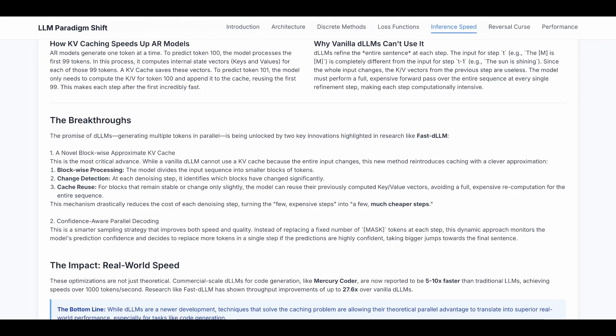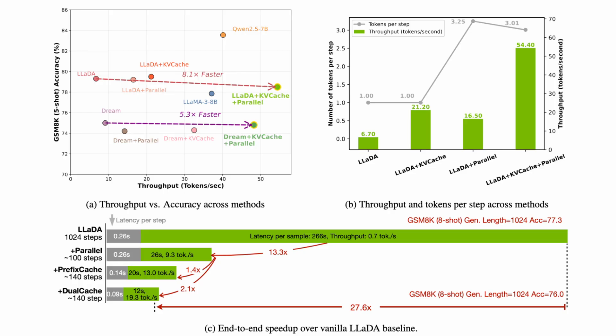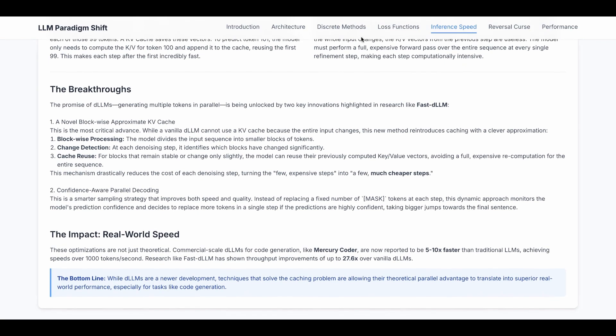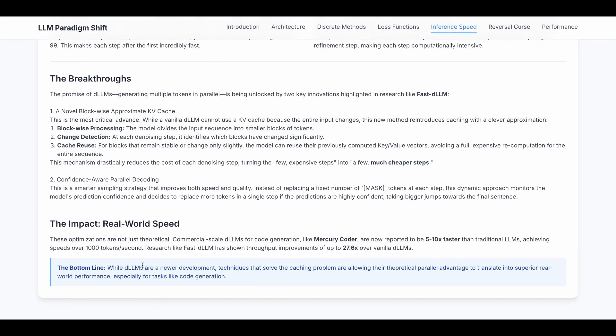With all those breakthroughs, diffusion-based LMs are actually faster than autoregressive right now. It's reported like for Mercury Coder, it's five to ten times faster than traditional LMs. And for Google DeepMind's Gemlight Diffusion, it's also five times faster. Note that the LMs are a newer development. Techniques that solve the bottleneck are still evolving, so this number might change soon.